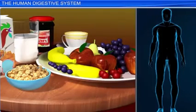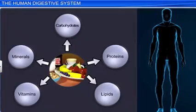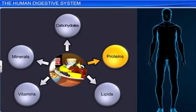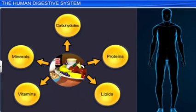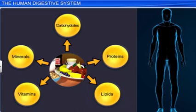Food is to our body what fuel is to an automobile. It contains biomacromolecules such as carbohydrates, proteins, and lipids, as well as vitamins and minerals, which enable our body to perform functions such as respiration, excretion, and so on.